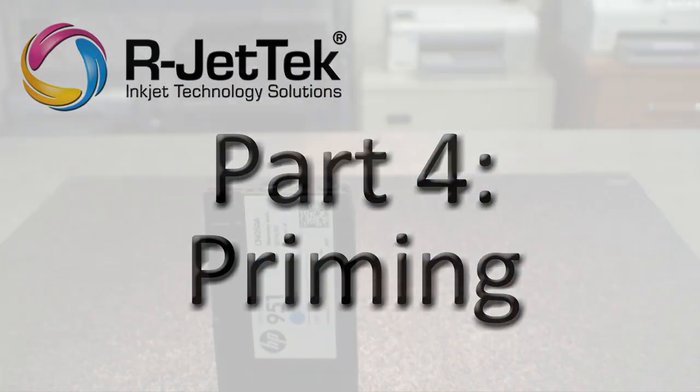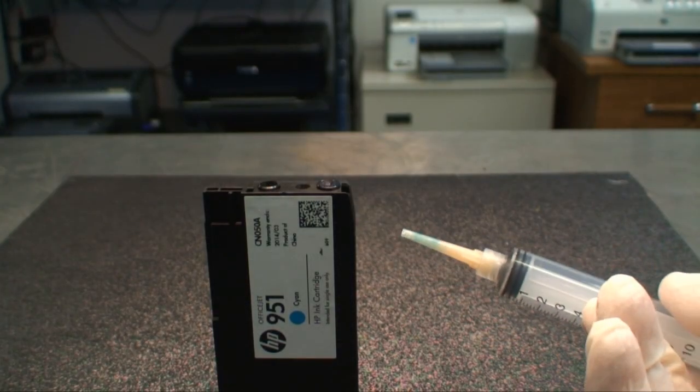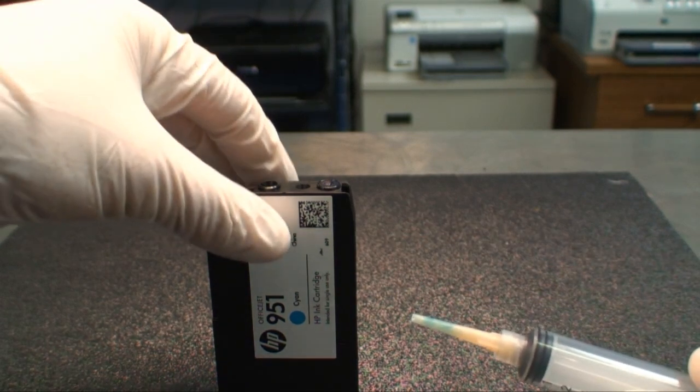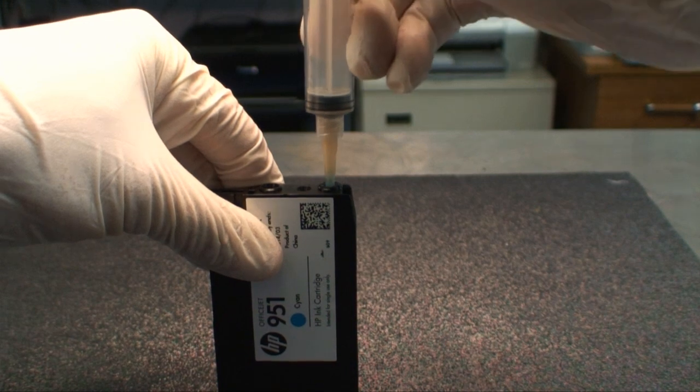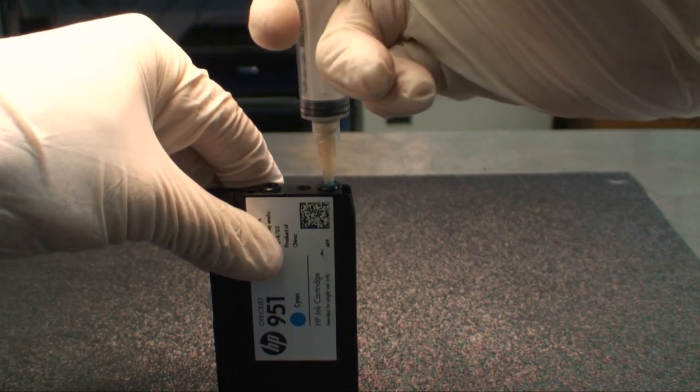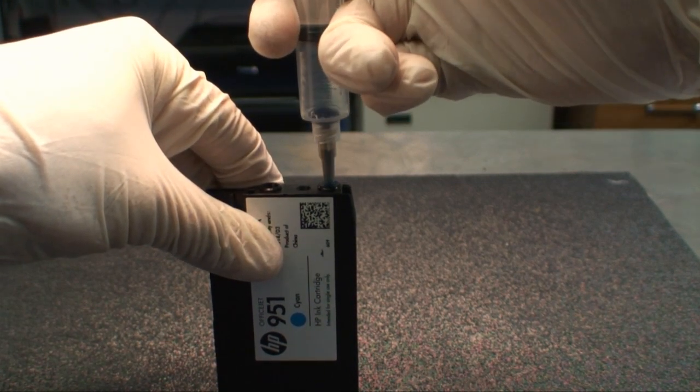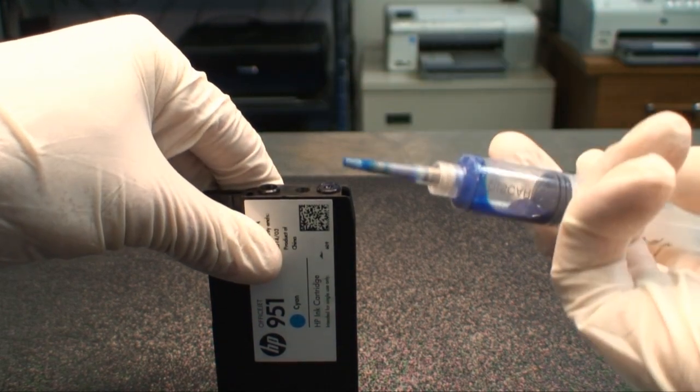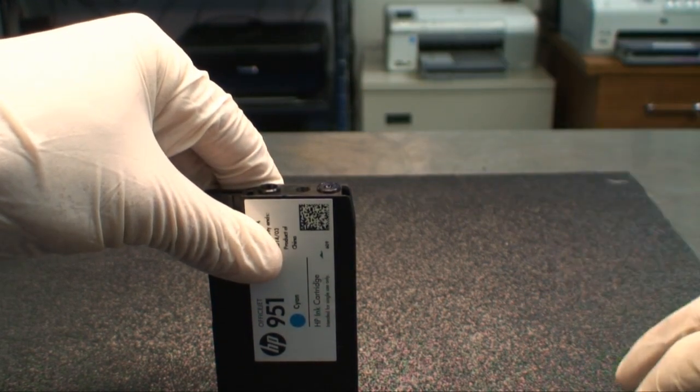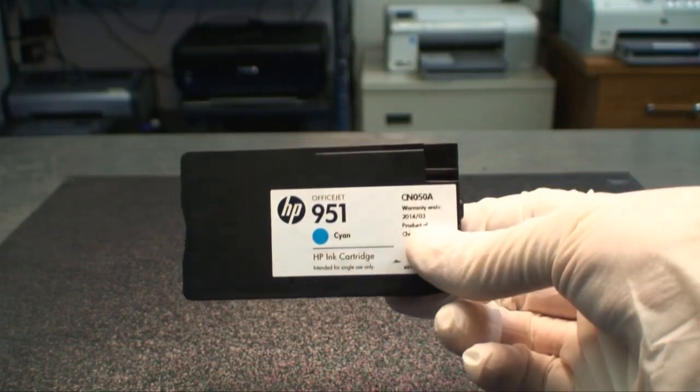The last and most important step is to prime the cartridge. Use the 10 milliliter syringe with the plastic needle tip and insert into the cartridge while the exit port is facing up and pull back on the plunger until you see ink start to fill the syringe. The cartridge is now filled, primed, and ready for use.